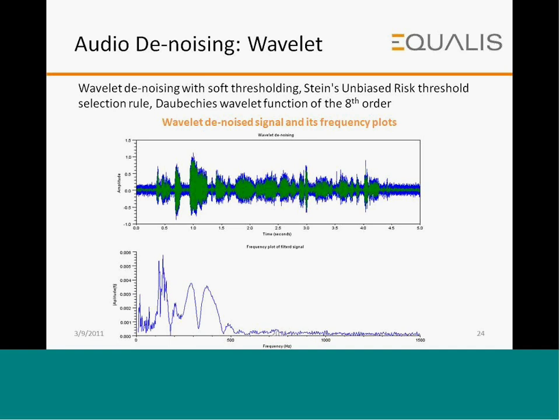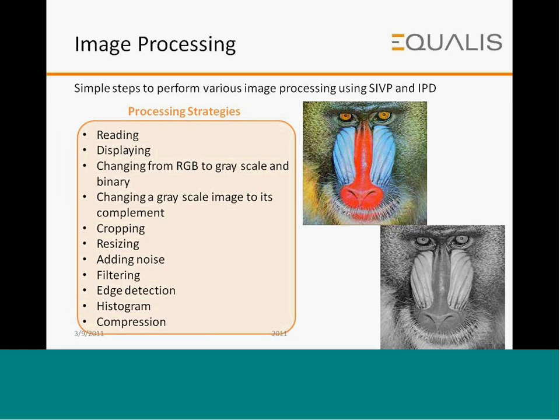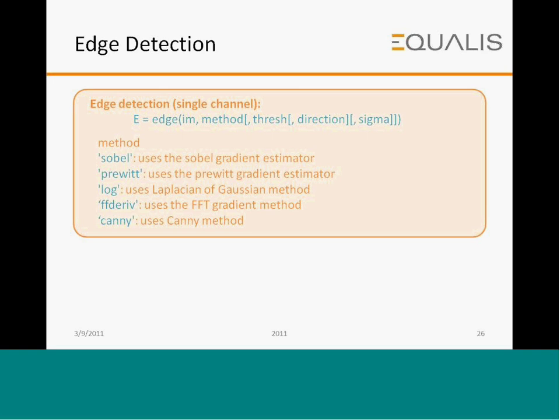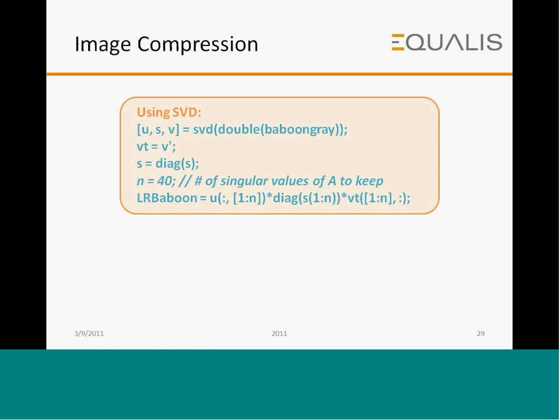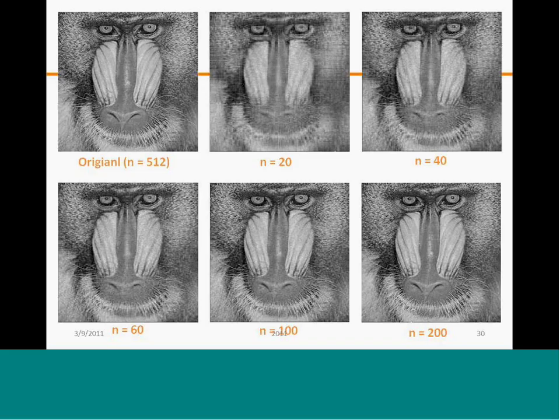Moving to another large application area of Scilab, which is image processing. We can read images, display them, convert from RGB to grayscale and binary, change a grayscale image to its complement, crop, resize, add noise, filter, perform edge detection, histogram analysis, and compression. Examples shown include edge detection, histogram plot, image compression, and motion detection.